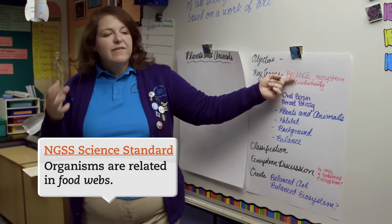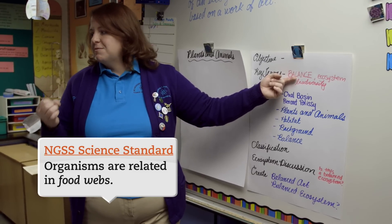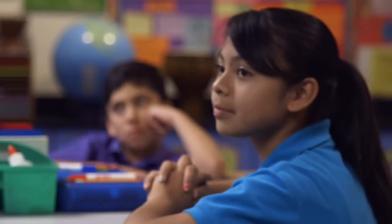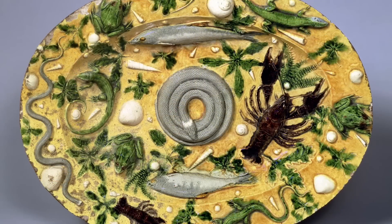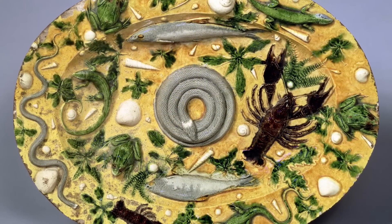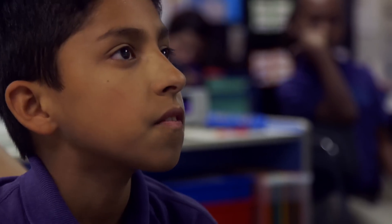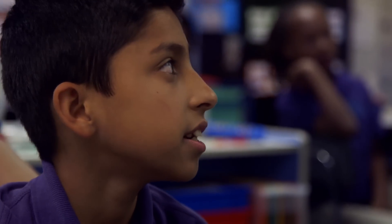In the NGSS standard — the life science standard that talks about ecosystems — it mentions the web of life, and how we as humans are part of that web of life. If you can discuss the concept of balance in as many different ways as possible, students can really start understanding that word in different ways.